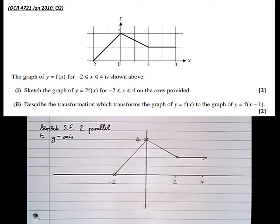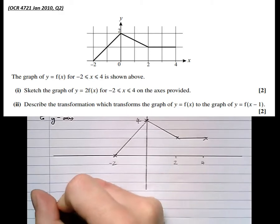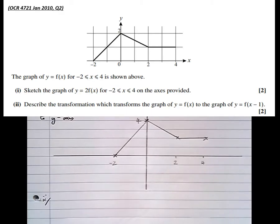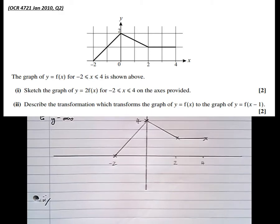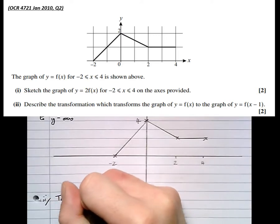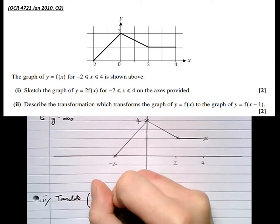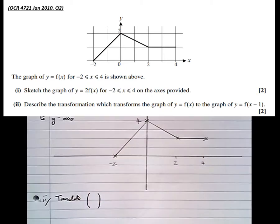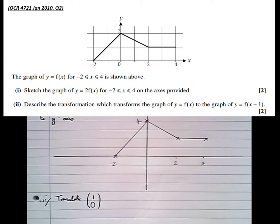So part 2. It says describe the transformation which transforms the graph of y equals f of x to the graph of y equals f of x minus 1. Well notice that we've taken 1. Taking away makes it a translate. And we've taken 1 away on the inside. When things happen inside the bracket, it does the opposite to the x values. So we're actually going to add 1 to x and nothing to y.